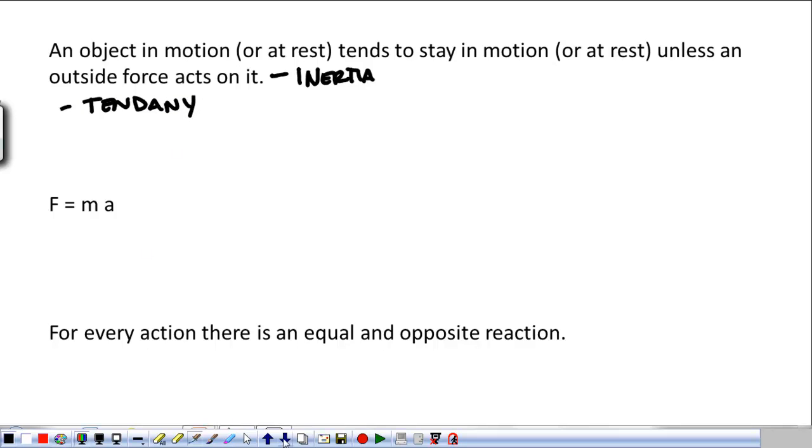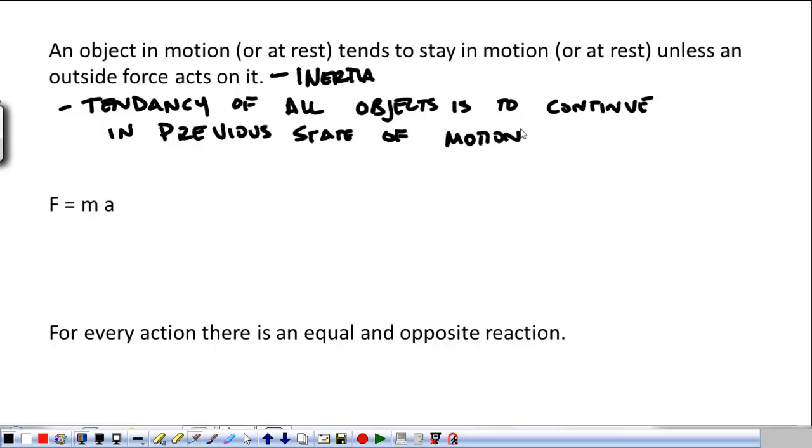I spelled tendency wrong. So the tendency of all objects is to continue in its previous state of motion. To put it another way, mass is stubborn. If something is moving, it wants to continue moving. If something is at rest, it wants to continue staying at rest. It's stubborn, it's sluggish, it doesn't like to change. And this tendency not to like to change, we call inertia.